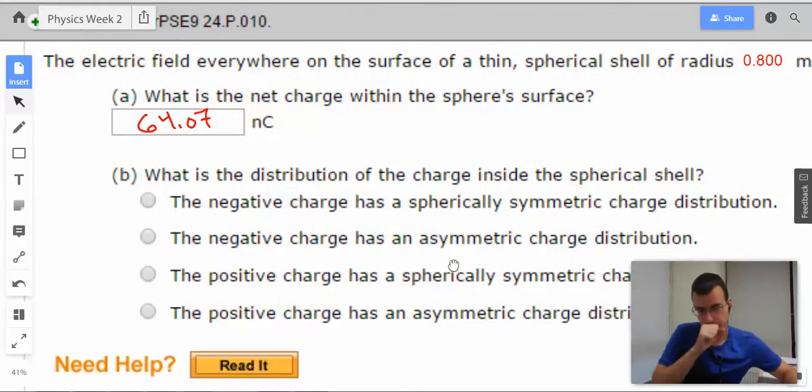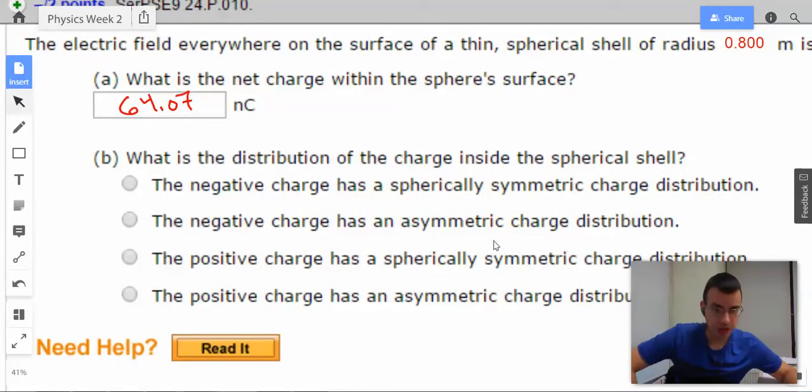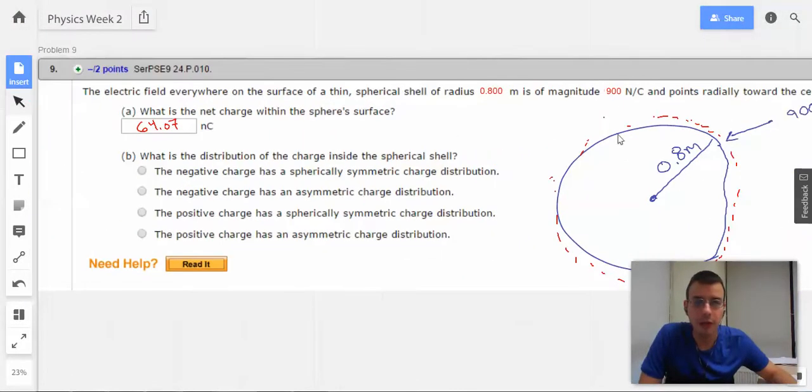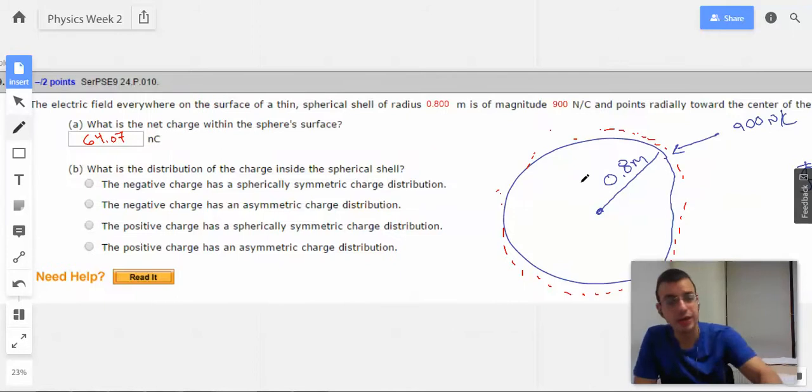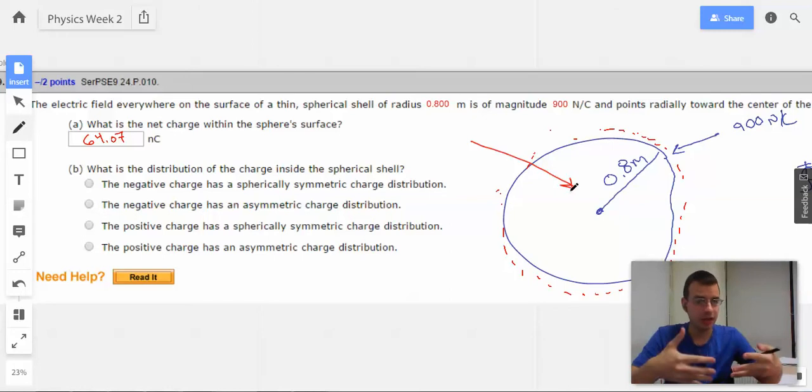So, what is the distribution of charge inside the spherical shell? So, we have an electric field going in. So, we know that it's going to have to be a sink on the inside. It's going in, so it has to be a negative charge on the inside. And then, it has a spherically symmetric charge distribution. It has to be spherically symmetric because we know that it's the same all over. So, it's going to be a negative charge that has a spherically symmetrical charge distribution.